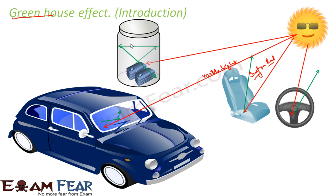So if you have a glass enclosure and put some object inside, sunlight will give visible light. But when this light falls on the object, what it gives back is infrared light. And these infrared rays will not be able to pass through the glass — they will keep bouncing inside. After some time this glass jar will become very hot.